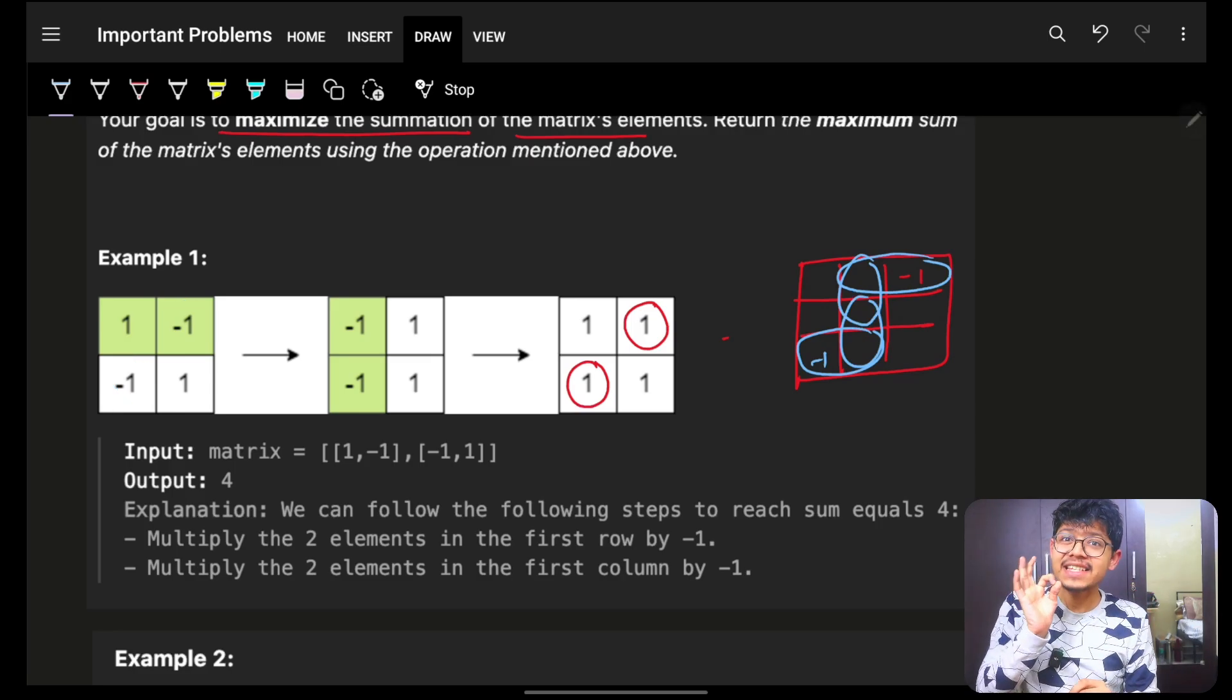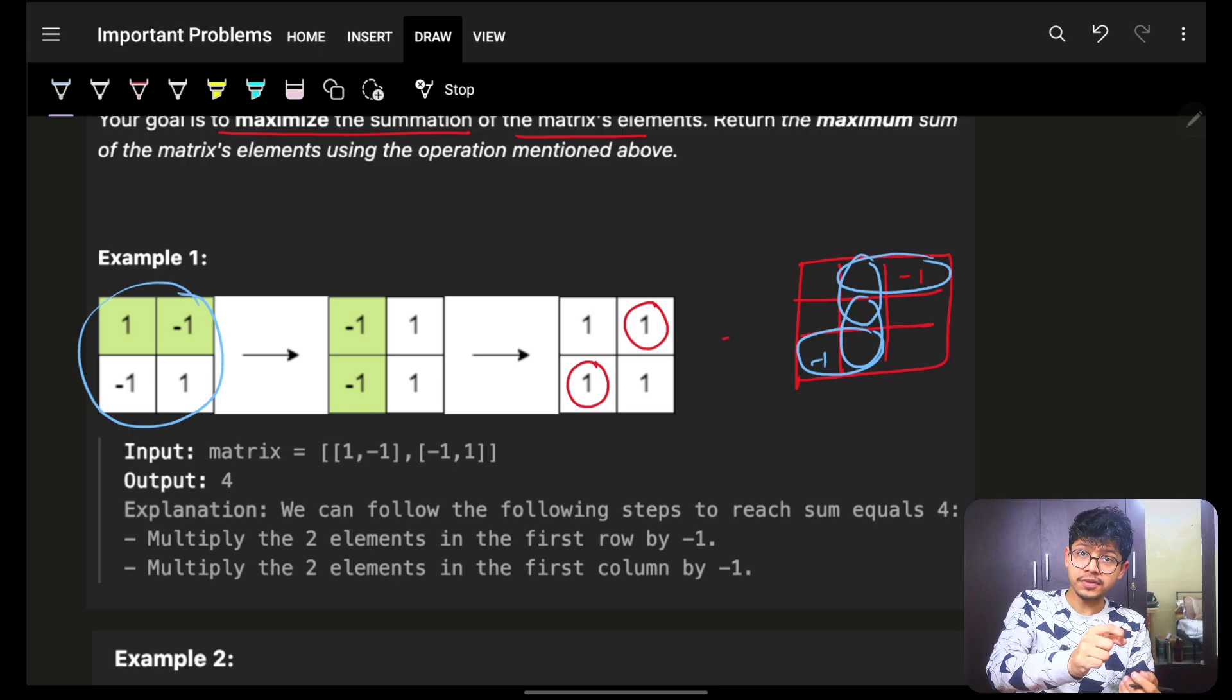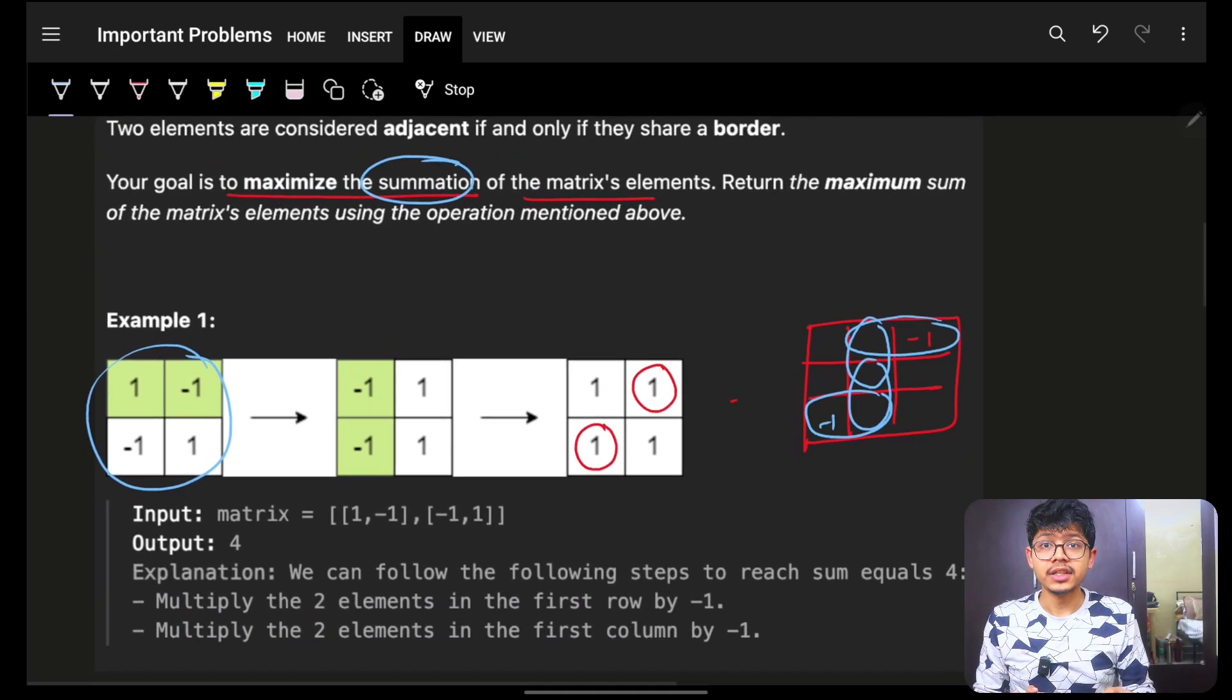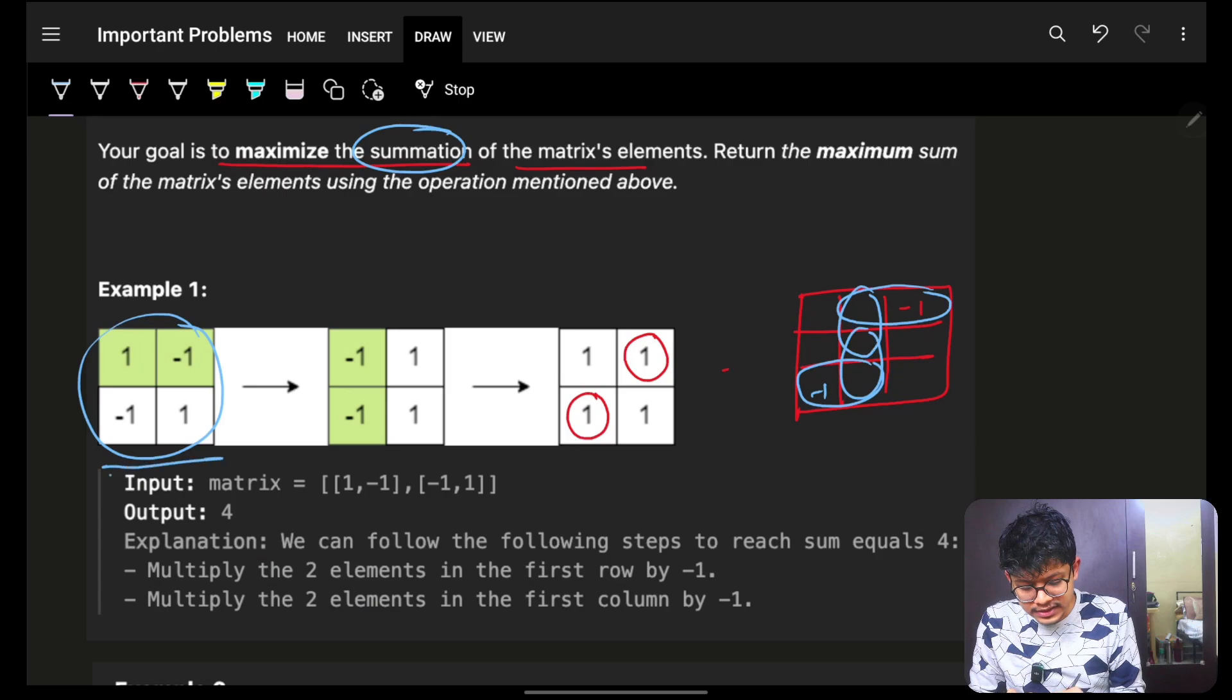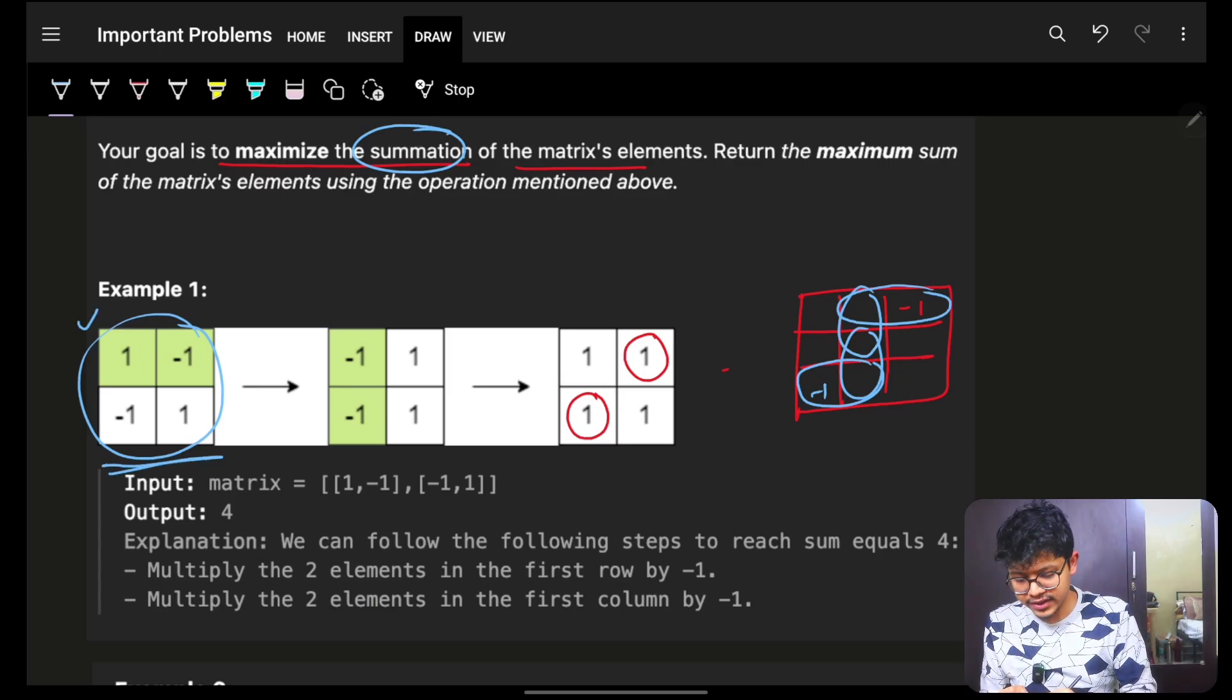Thus, in best case scenario, if I have even count of negative numbers, I can make all those negative numbers as positive. My total final answer, which is the maximum summation, will be nothing but the summation or absolute summation of individual values of this entire matrix.